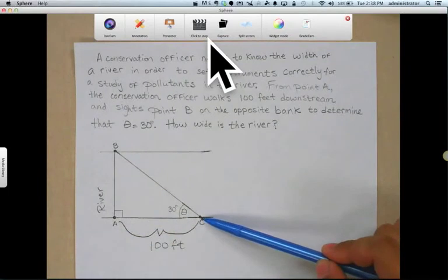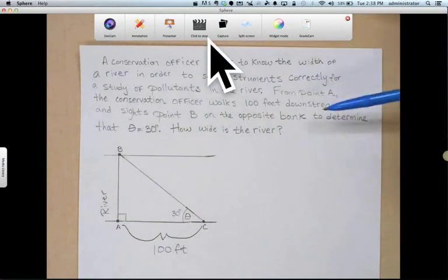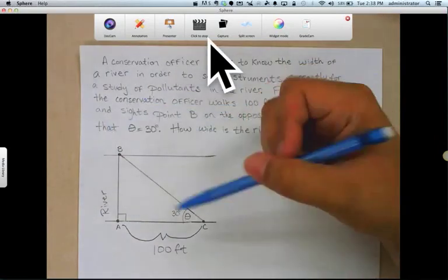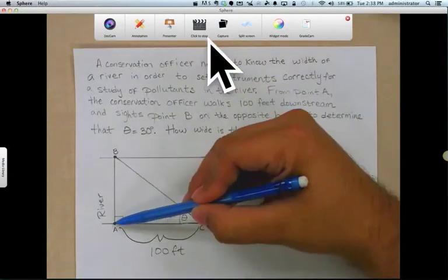And sights point B. So here's point B on the opposite bank to determine that theta, this angle right here is 30 degrees. So the question is, how wide is the river?